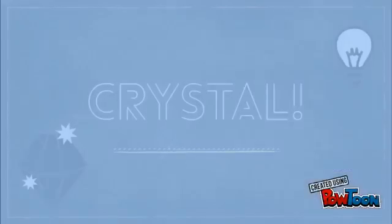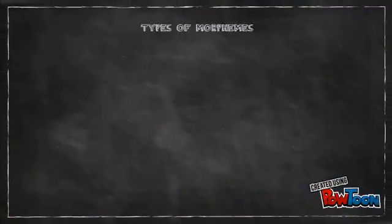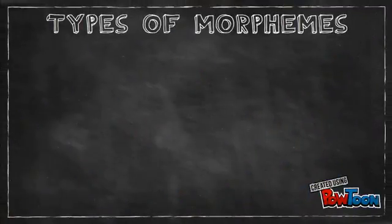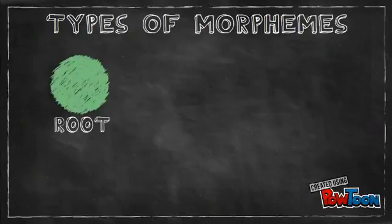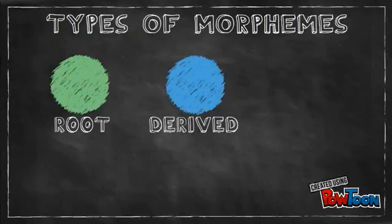Crystal! So now we'll turn our attention to the types of morphemes that we can find. Everything you need to know right now is that there are three of them: the root, derived, and compound.